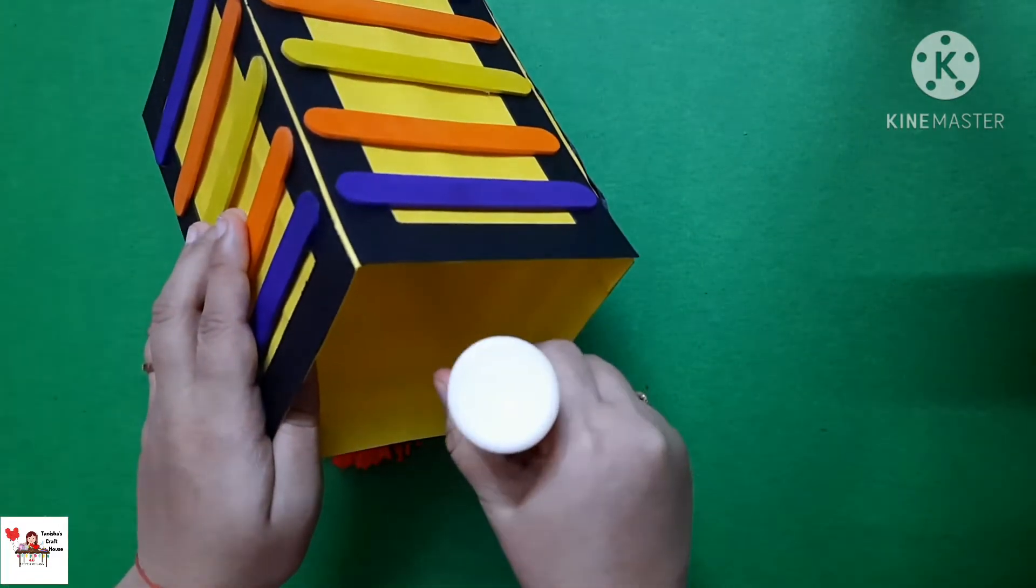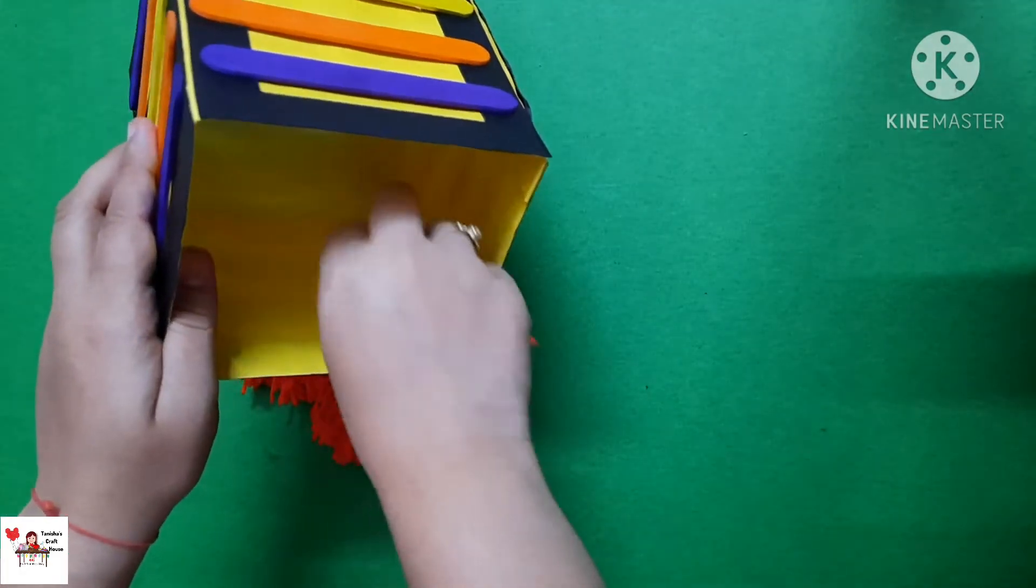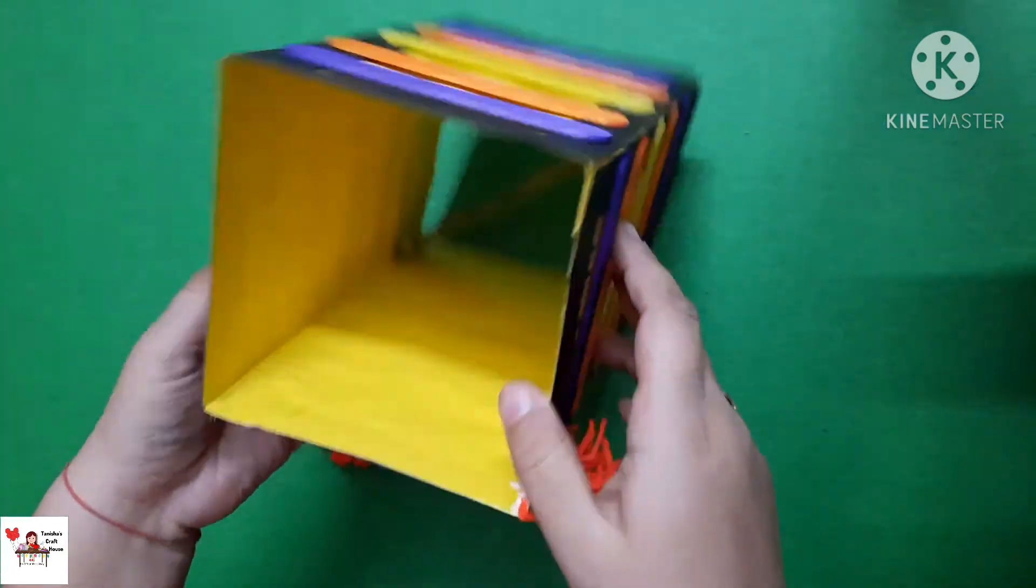So if you want to know how to make these, go check that video out. Now I am going to take these tassels and just stick it on all the 4 sides of our lantern.